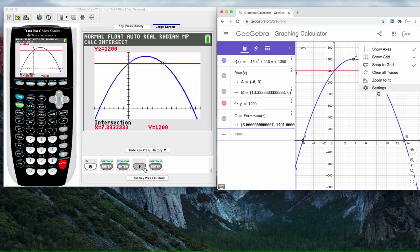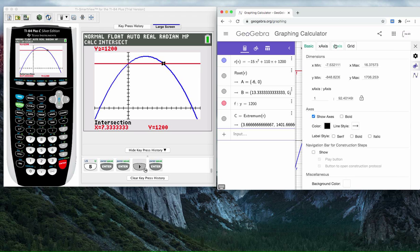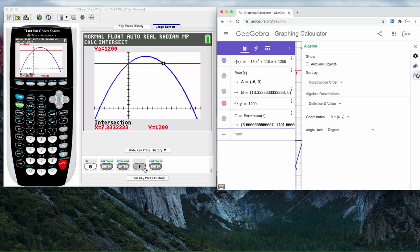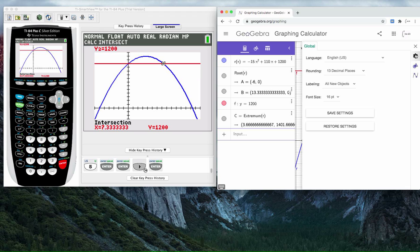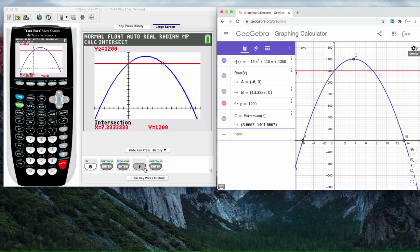All these decimals are kind of getting in the way. I'm going to go here to settings. On this gear icon, it's 13 decimal places. Let's go to four. That's a little easier to read. This is located at 3.6667, and the y-value is 1,401.6667. Basically, the six repeats indefinitely. When we round it, we round it to seven.